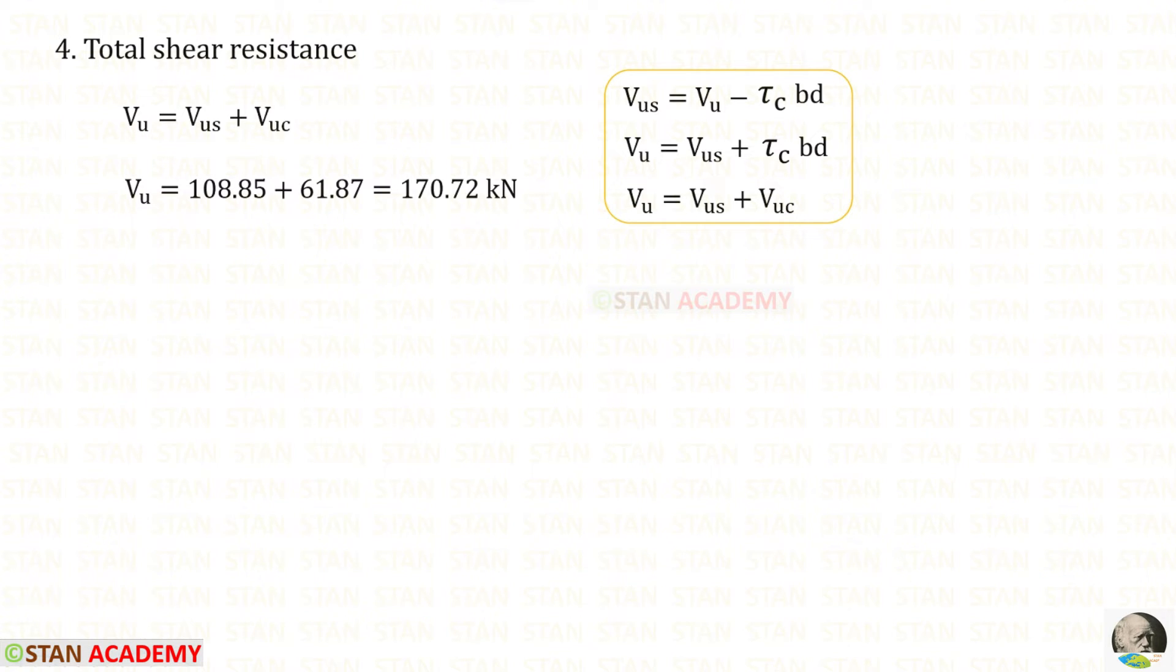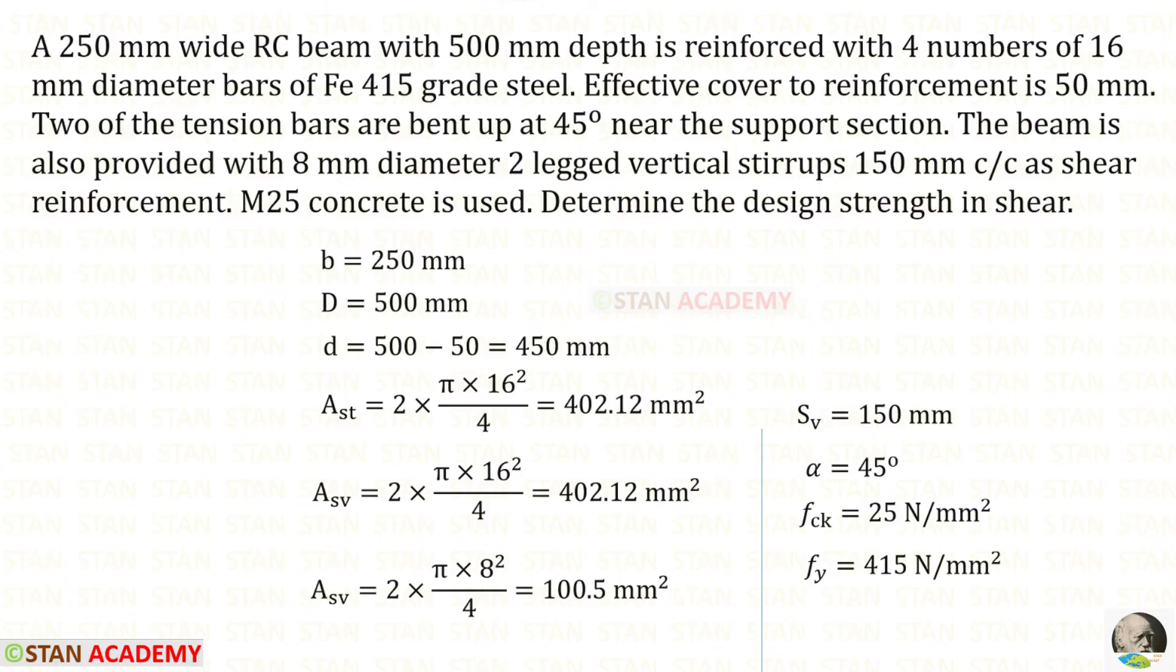Now, let us find the total shear resistance. For that, we have to add VUS and VUC. When we add that, we will get 170.72 kN. Now, let us see the second problem.